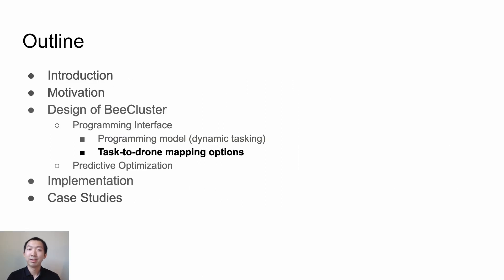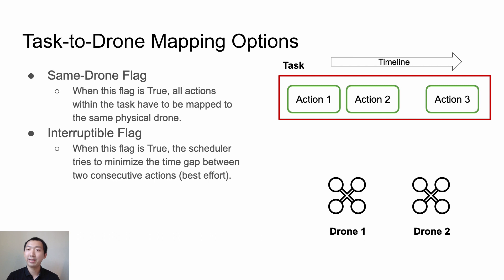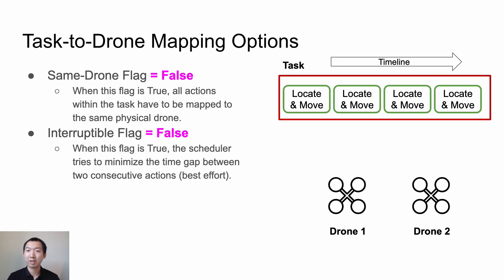Next, we talk about the task-to-drone mapping options. When a task is being executed, we need to map the actions to physical drones. In a naive design, we simply always map the entire task to one physical drone. However, we find this solution is not sufficient. In B-Cluster, we provide more options. When developers create a new task, they can configure the task-to-drone mapping through two flags: the same-drone flag and the interruptible flag. When the same-drone flag is set, all actions within a task have to be done on the same physical drone. When the interruptible flag is set to false, the runtime system will try to minimize the time interval between two consecutive actions. For example, if we want to track a moving object, we can create a task with a bunch of locate and move actions. The actions can be performed on different drones, but we want to minimize the time gaps between consecutive actions, because if the gap is too long, the tracking may fail. In this case, we can set both the same-drone flag and the interruptible flag to false.